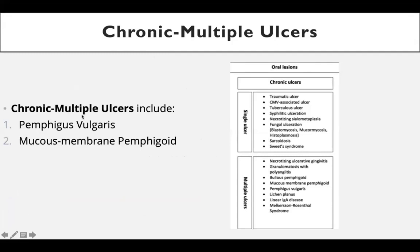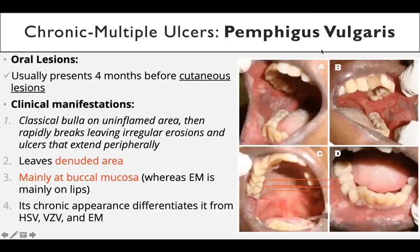Now we are going for chronic multiple ulcers. There are two types: chronic multiple ulcers means there are more than one ulcer, not single lesions — multiple lesions of the oral cavity. We are targeting pemphigus vulgaris and mucous membrane pemphigoid. These are more than enough for this syllabus. Many people studying stomatology as medical students follow usually these two.